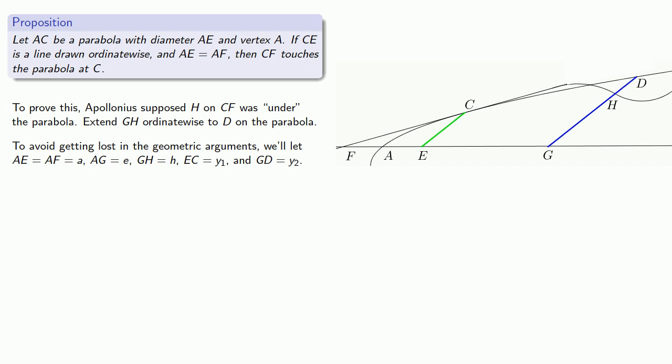AG, we'll call E. We'll call GH, H. EC, Y1. And GD, Y2.